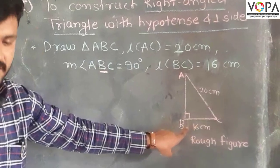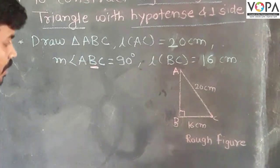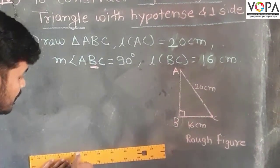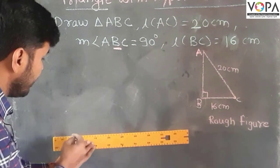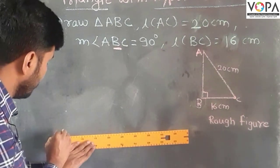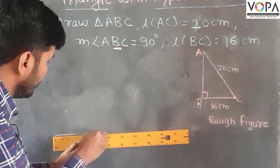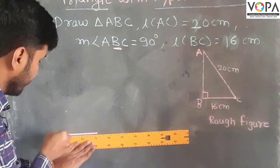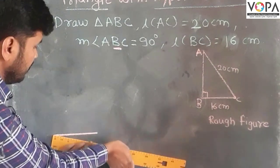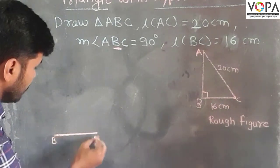So that's why I can draw the length of BC or side BC, that is the base, and this is 16 centimeters long. So here is the 16 centimeters, that is the side BC.